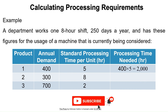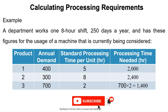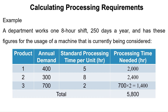For the first product, it is 400 times 5 equals 2,000 hours. For the second one, it is 300 times 8 equals 2,400 hours. And for the third product, it is 700 times 2 equals 1,400 hours. The total needed processing time equals 2,000 plus 2,400 plus 1,400 equals 5,800 hours.